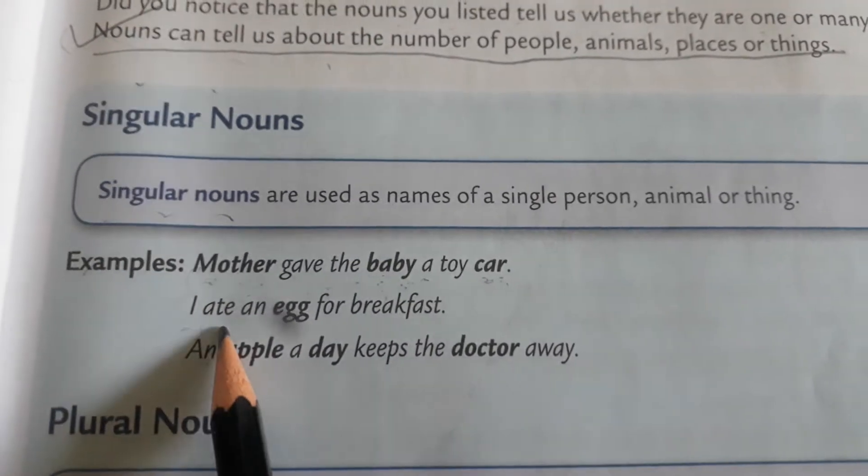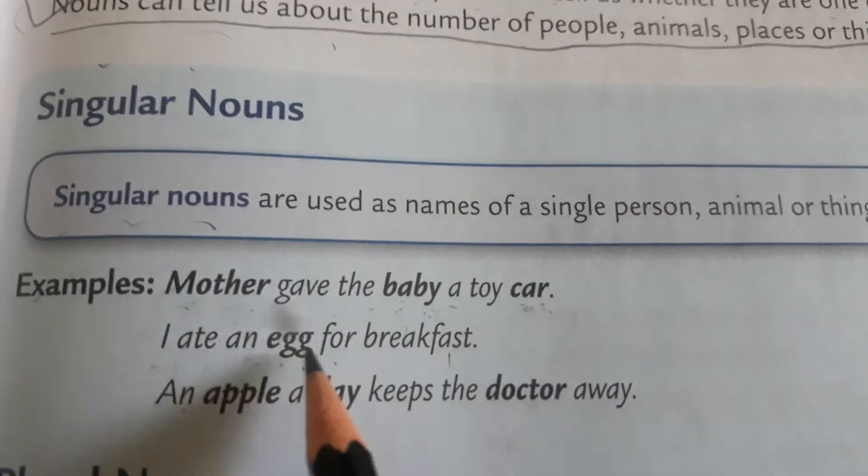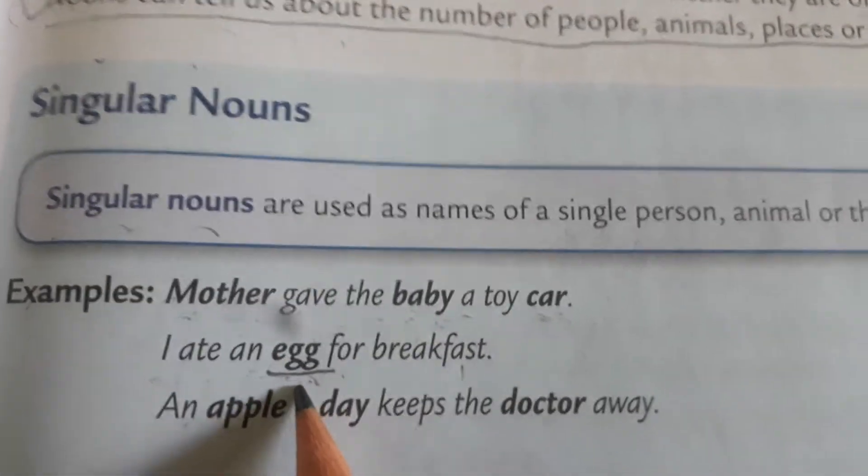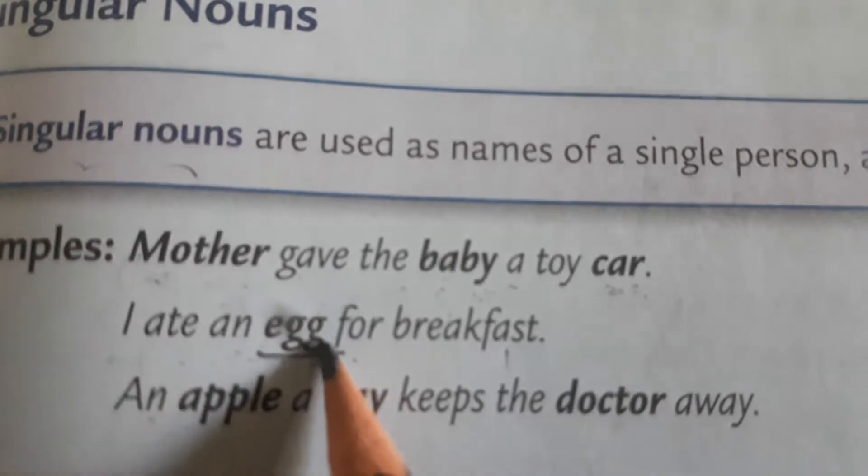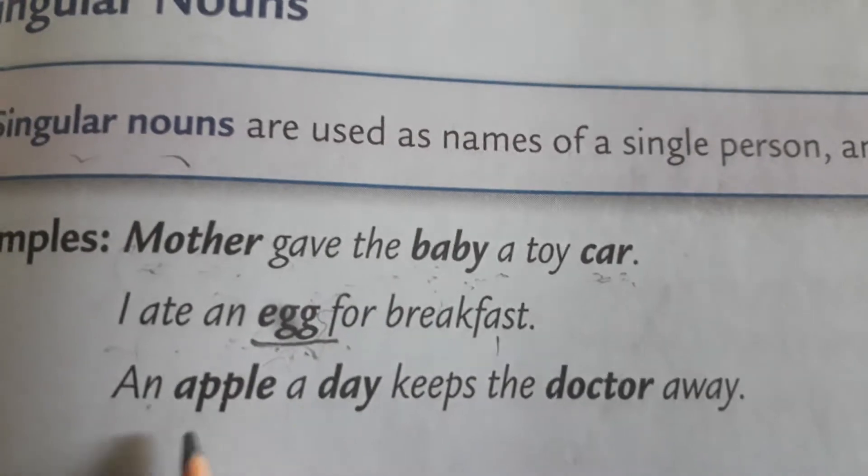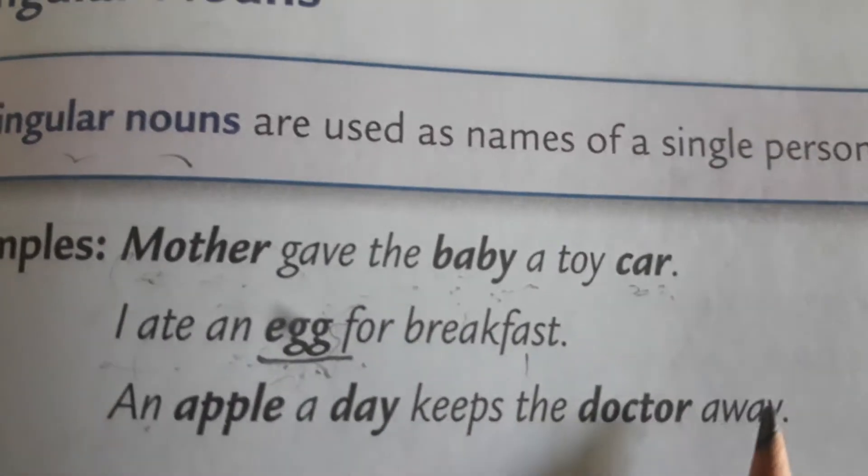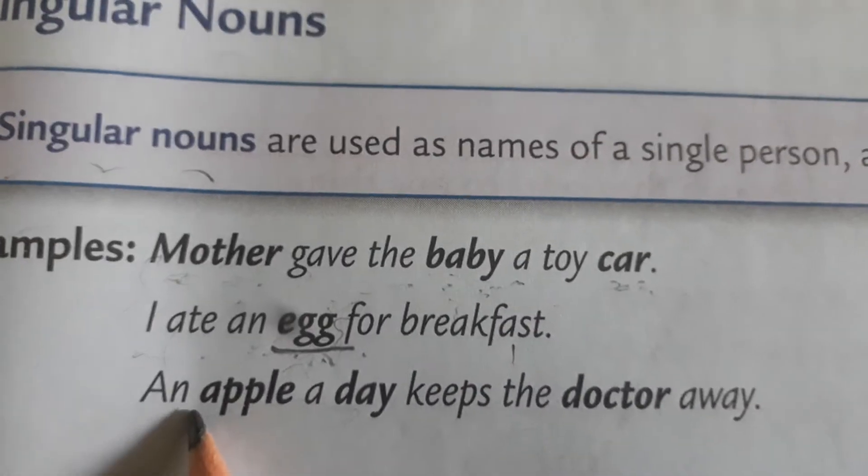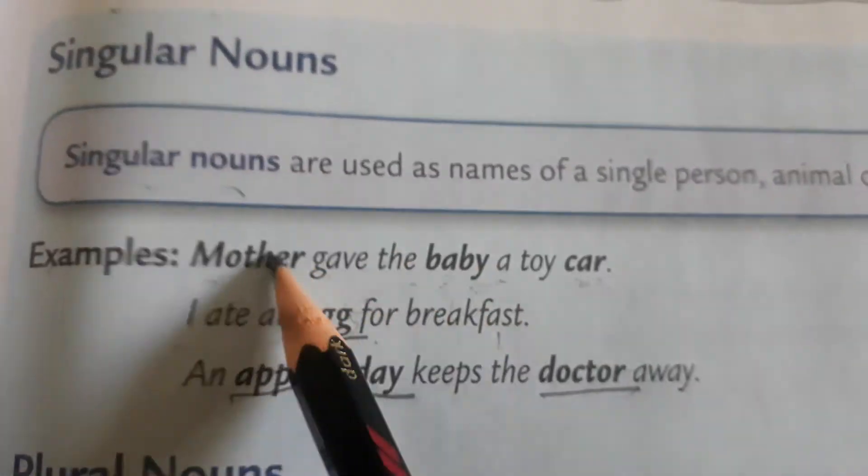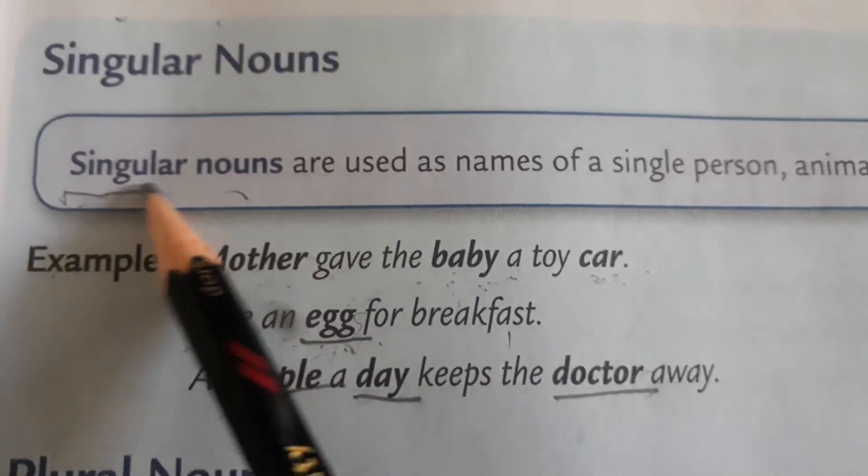Second example: I ate an egg for breakfast. Here, what is written in bold letter? Egg. And here the egg is singular noun, only one egg. An apple a day keeps the doctor away. Now here in this sentence, there are three nouns: Apple, day, doctor. There is only one apple, single day, and one doctor. These are examples of singular nouns.